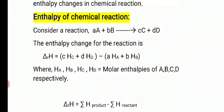So we are considering: a moles of A plus b moles of B gives c moles of C plus d moles of D. The enthalpy change in a reaction is the difference between the enthalpy of products and the enthalpy of reactants. Enthalpy of a chemical reaction is denoted by ΔrH — where small 'r' stands for reaction.